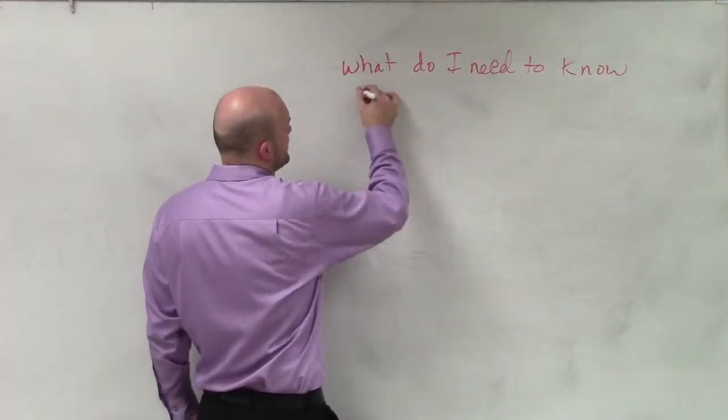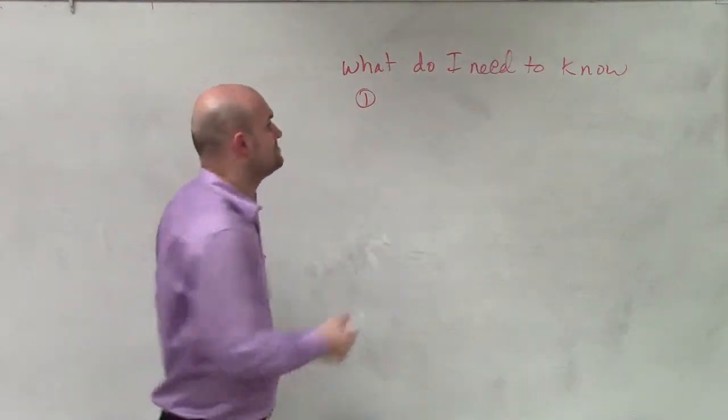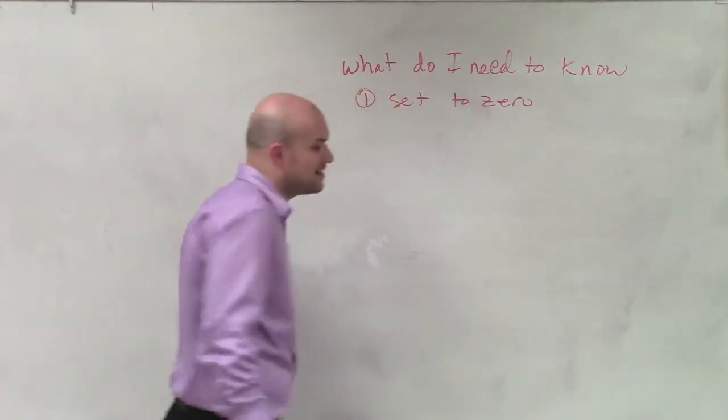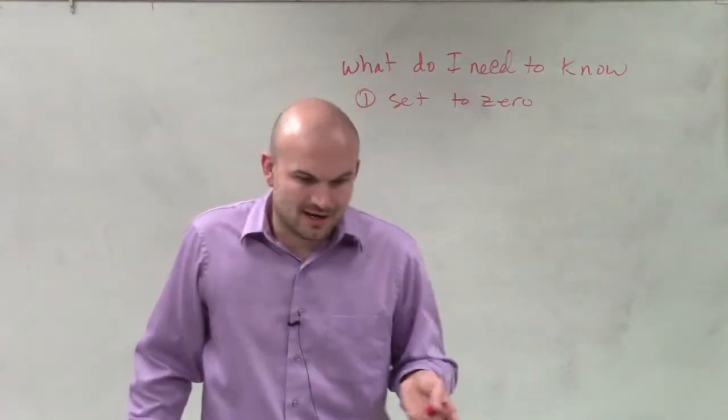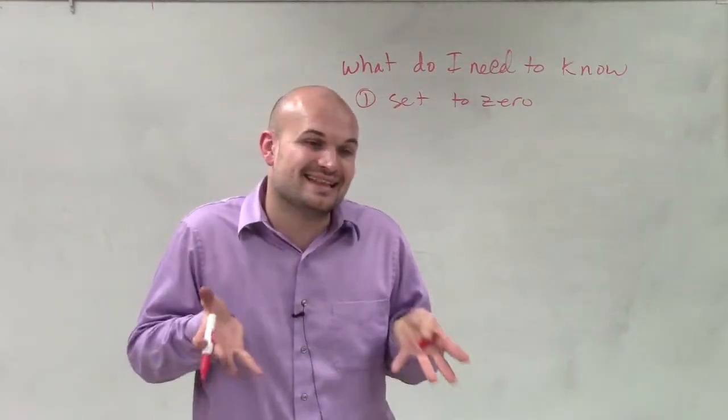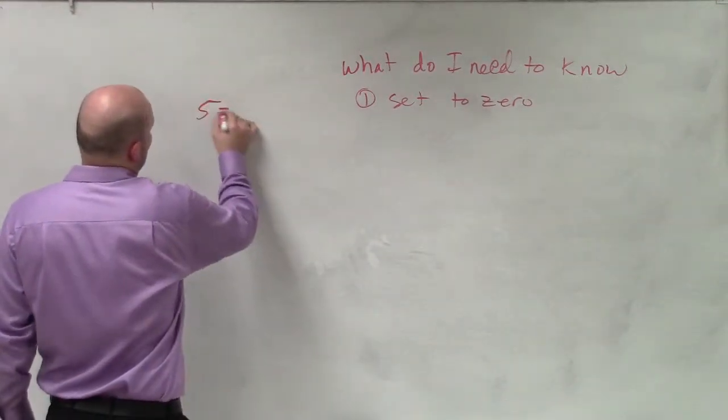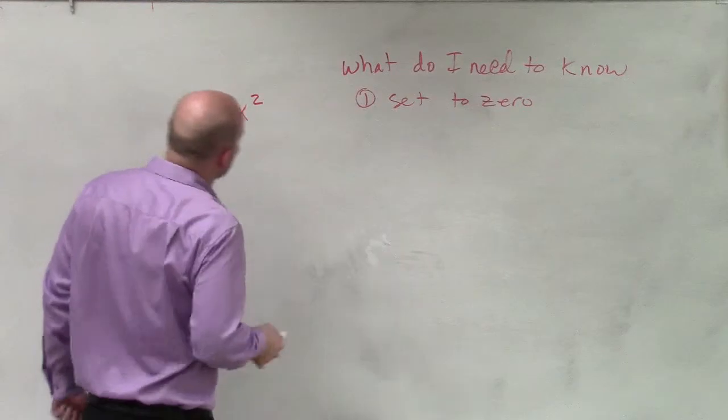So the first thing when we're solving an equation is make sure that it is set to zero. When we're trying to factor and we have a quadratic term, you want to make sure you set those values equal to zero. If you have an equation like 5 equals x squared,